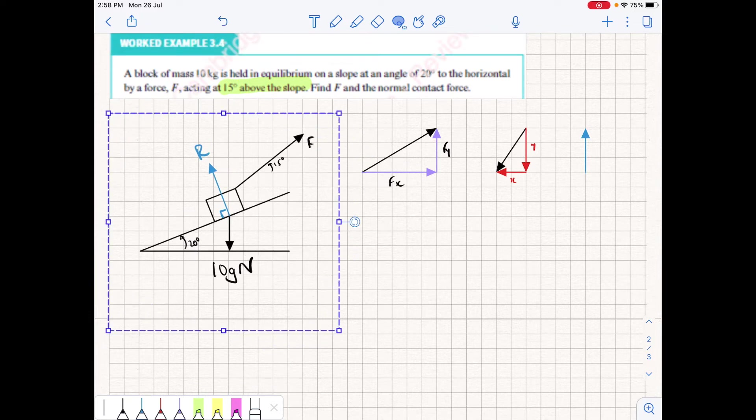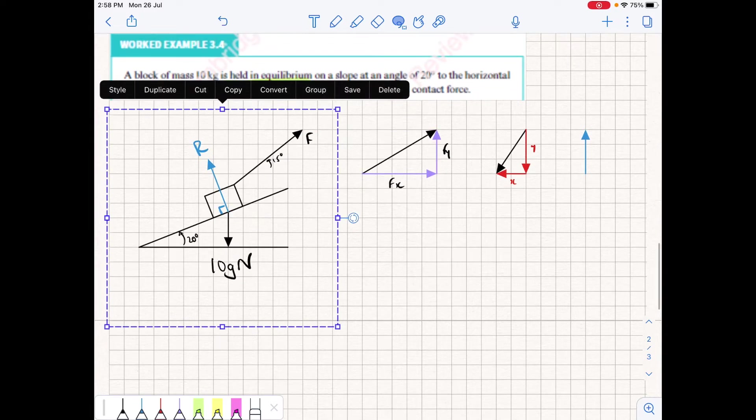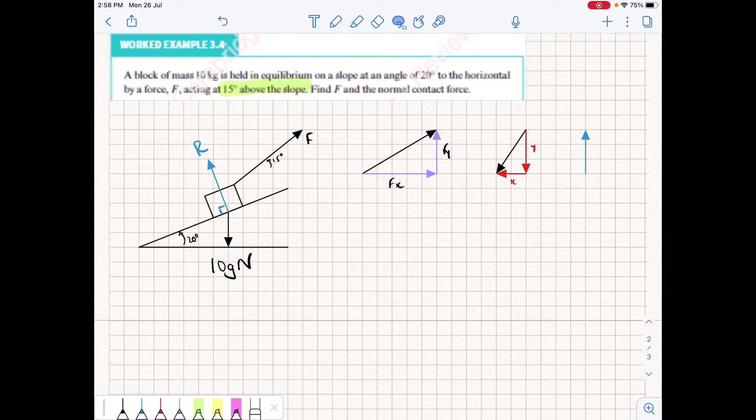When we're dealing with forces or unknown forces that are at these angles, we try to resolve them so that we eliminate one of the components, either the vertical or the horizontal. Now when we're given two forces at different angles, we have to decide which line of action to choose with which force.